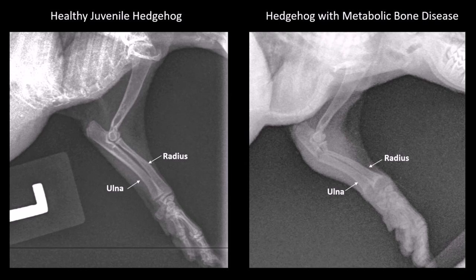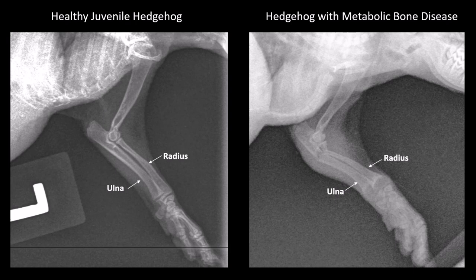Finally, the ends of the bone in the hedgehog with metabolic bone disease mushroom out. In the normal leg the bones triangulate out a little, but not into a big mushroom shape. The mushrooming out occurs because the bones are very weak here, and this mushrooming out is characteristic of a disease called hyperparathyroidism.